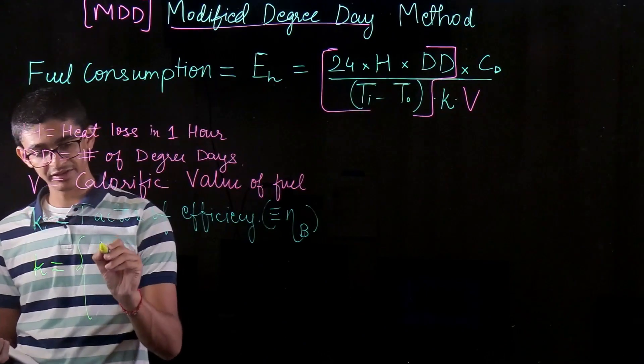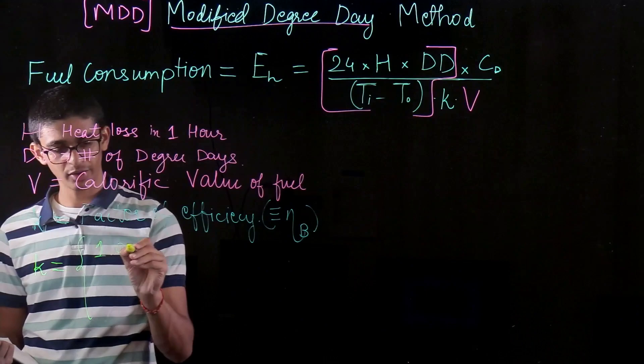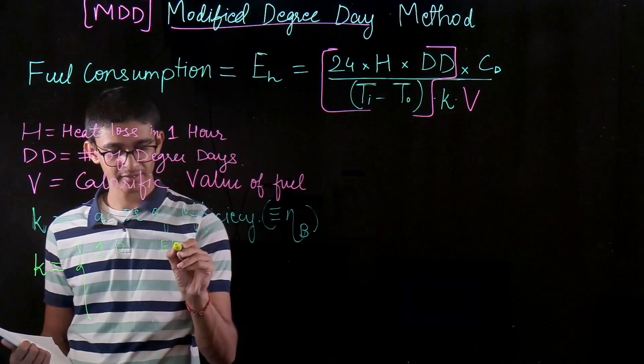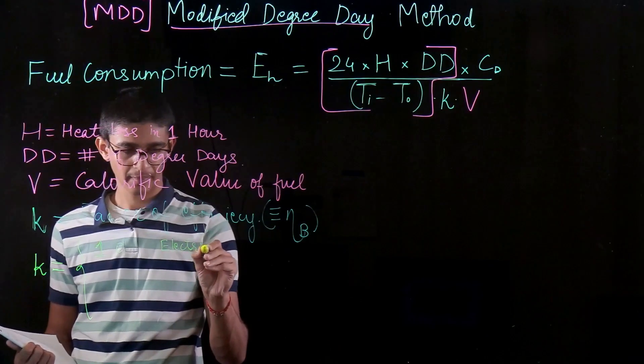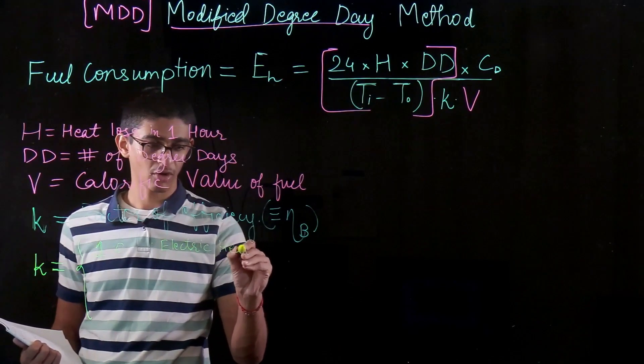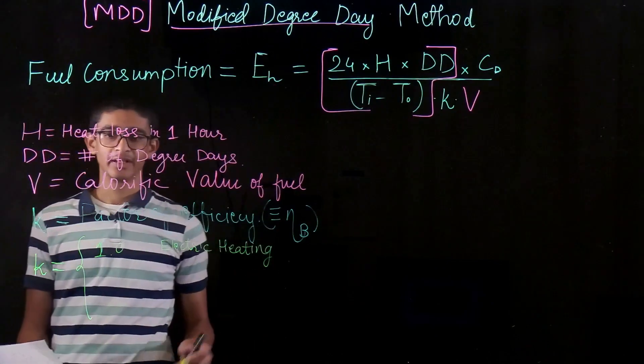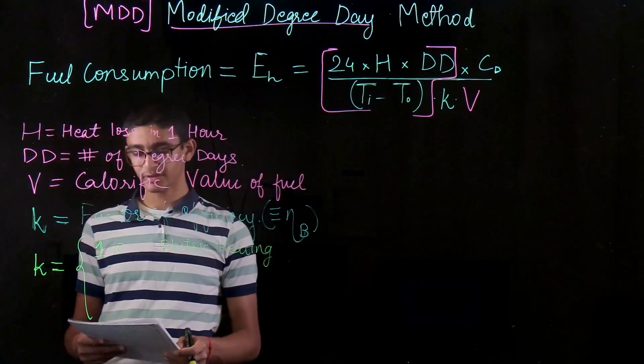So there are three values which are given, which is one point zero, that is one, if we are having electric heating. That means we are assuming that all the electrical energy which is supplied to that electric heater is converted to the heating or thermal energy.